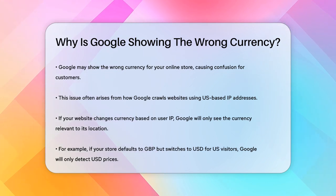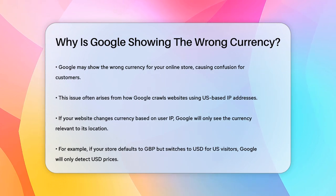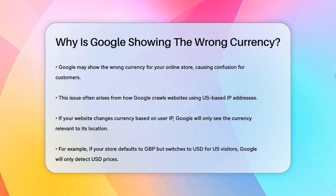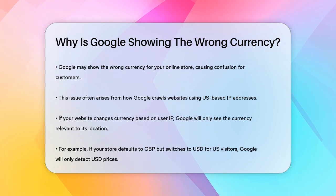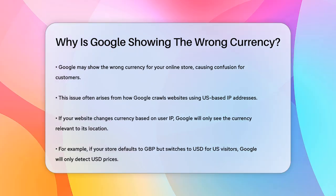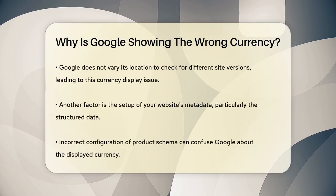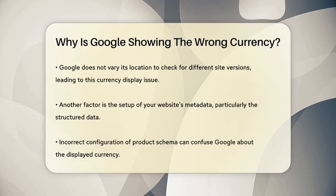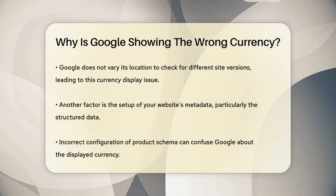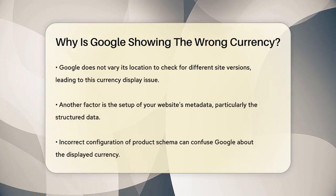One of the main reasons is related to how Google crawls your website. Google's crawlers — the bots that scan your site — often come from US-based IP addresses. If your website automatically changes the currency based on the user's IP address, Google will only see the US dollar prices because it's crawling from a US IP. For example, if your store is set to GBP by default but automatically switches to USD for US visitors, Google will always see the USD prices.